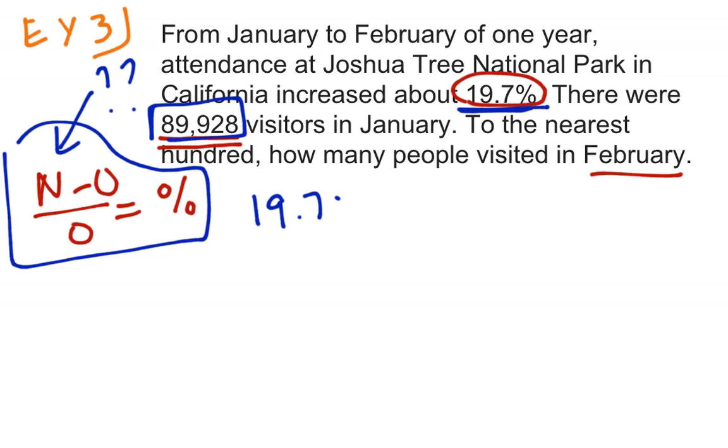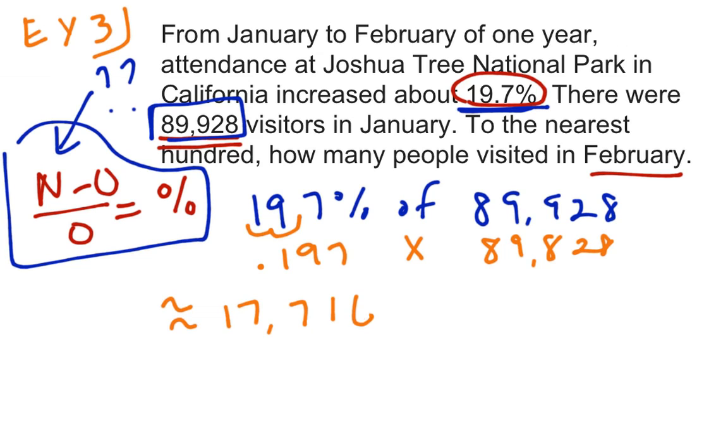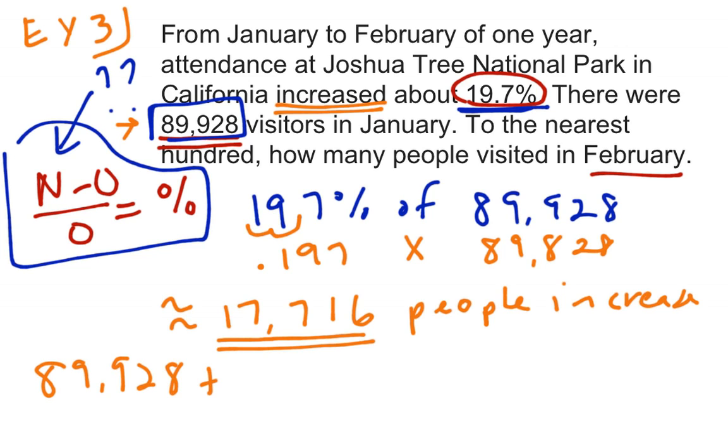So if I take 19.7 percent of 89,928, I can translate the word of into multiplication, change the percent into a decimal, so I get 0.197 multiplied by 89,828. And that's going to give me approximately, I had to round off, so it's approximately 17,716 people. So that's the increase. So I know it went up. They told me it increased right here on the problem. So I know I need to take my original January number of visitors and add the increase. So I had 89,928 visitors in January. I know it went up 19 percent, so that's 17,716 more people in February. And if I add those two together, I'll get the total number of visitors in February.